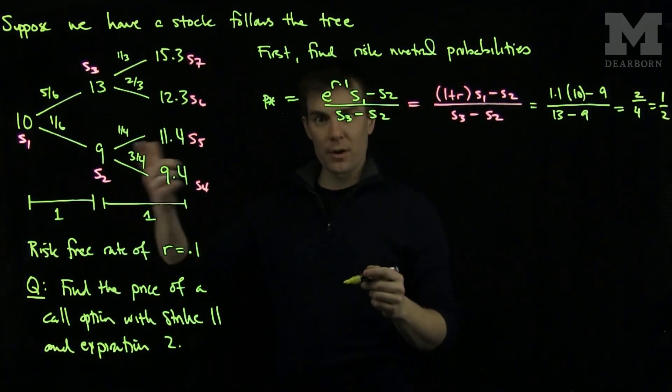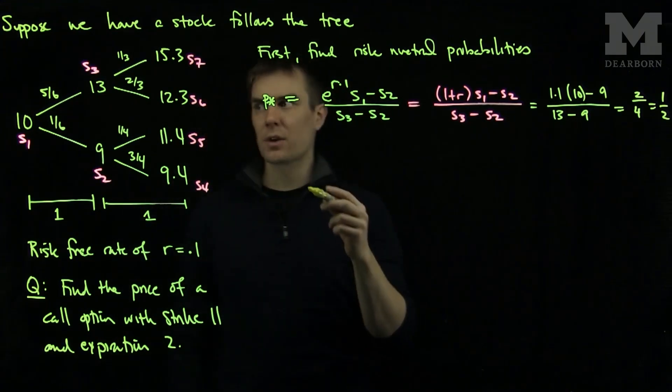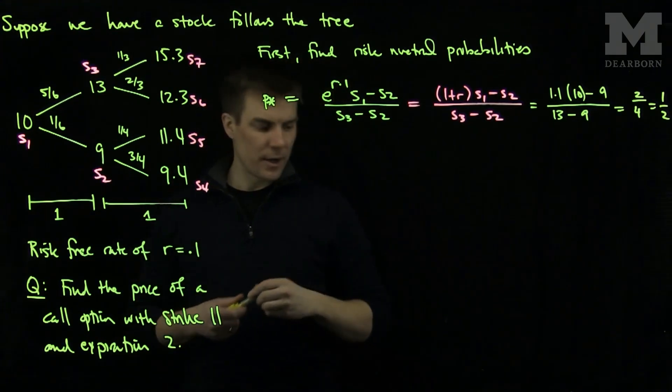So that gives us the first step in our tree. So what we see is we see that P star is equal to 1 half. So in our new tree,